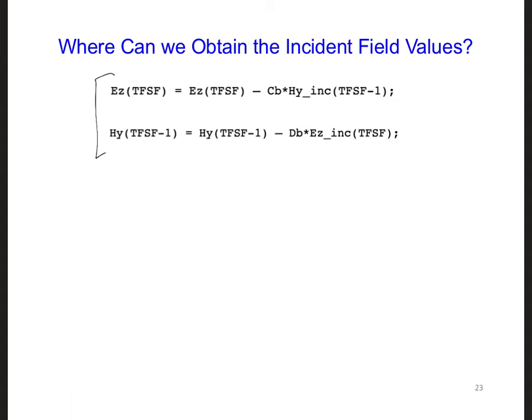If we obtain the incident field values from a secondary one-dimensional FDTD grid, which we can call an incident grid. So we'll have an incident one-dimensional FDTD grid. This is completely separate from the FDTD grid that you already have implemented in your model.